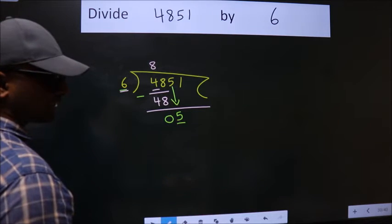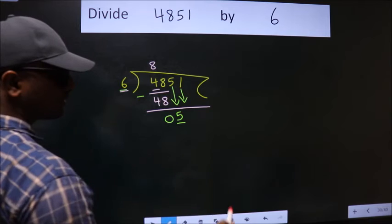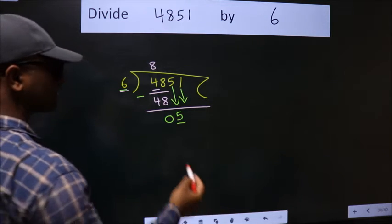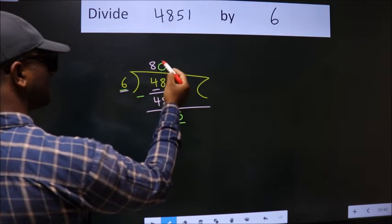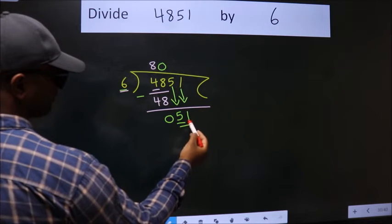So we should bring down the second number. And the rule to bring down second number is put 0 here. Then only we can bring down this number. So, 51.